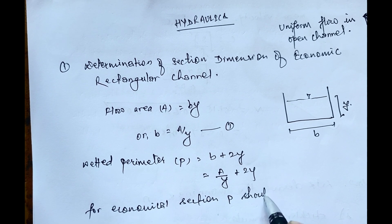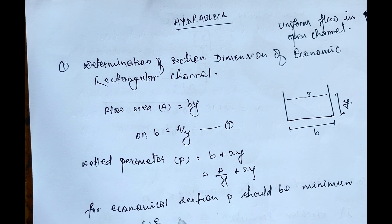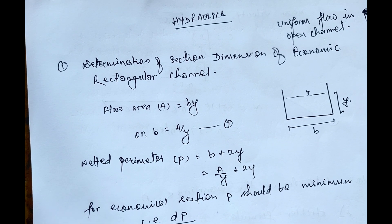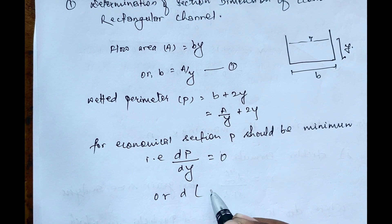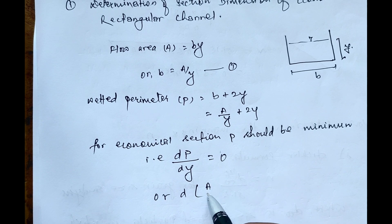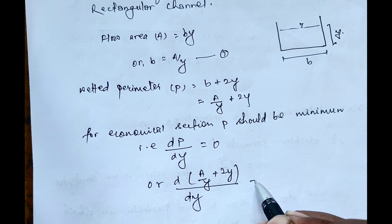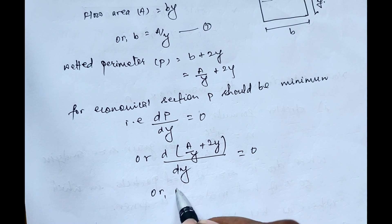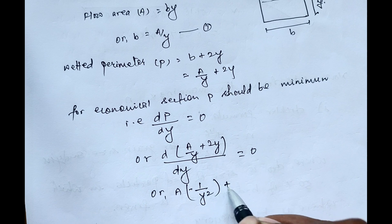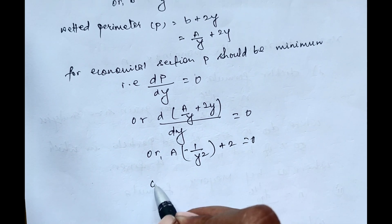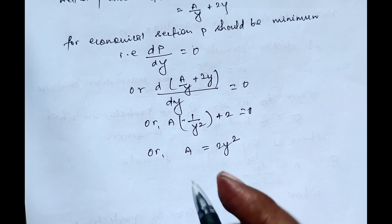For an economical section, P should be minimum, that is dP/dy equals 0. Differentiating A/y plus 2y with respect to y and setting it to zero, we get minus A divided by y squared plus 2 equals 0, which simplifies to A equals 2y squared.